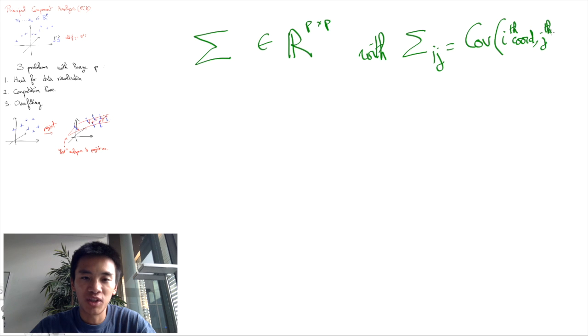For instance, sigma_11 is going to be the variance of the first entries of the vectors x1 until xn. In other words, sigma_11 is going to be the variance of the collection of data x1,1, x2,1, x3,1, and so on until xn,1.